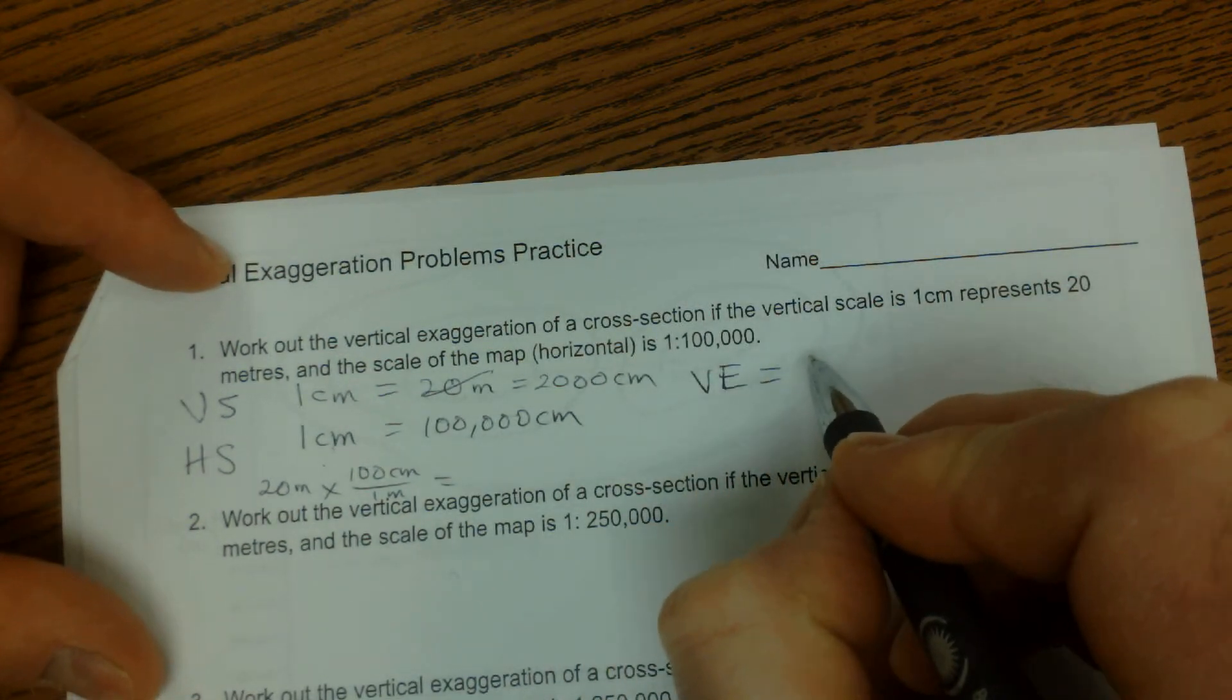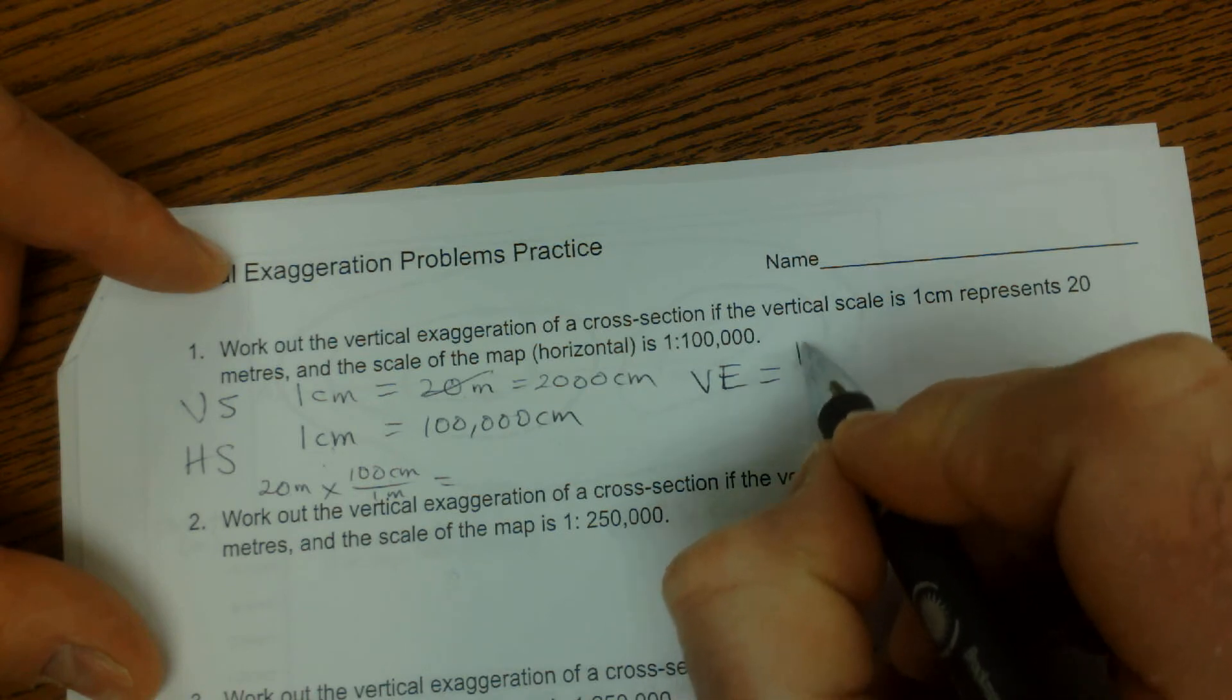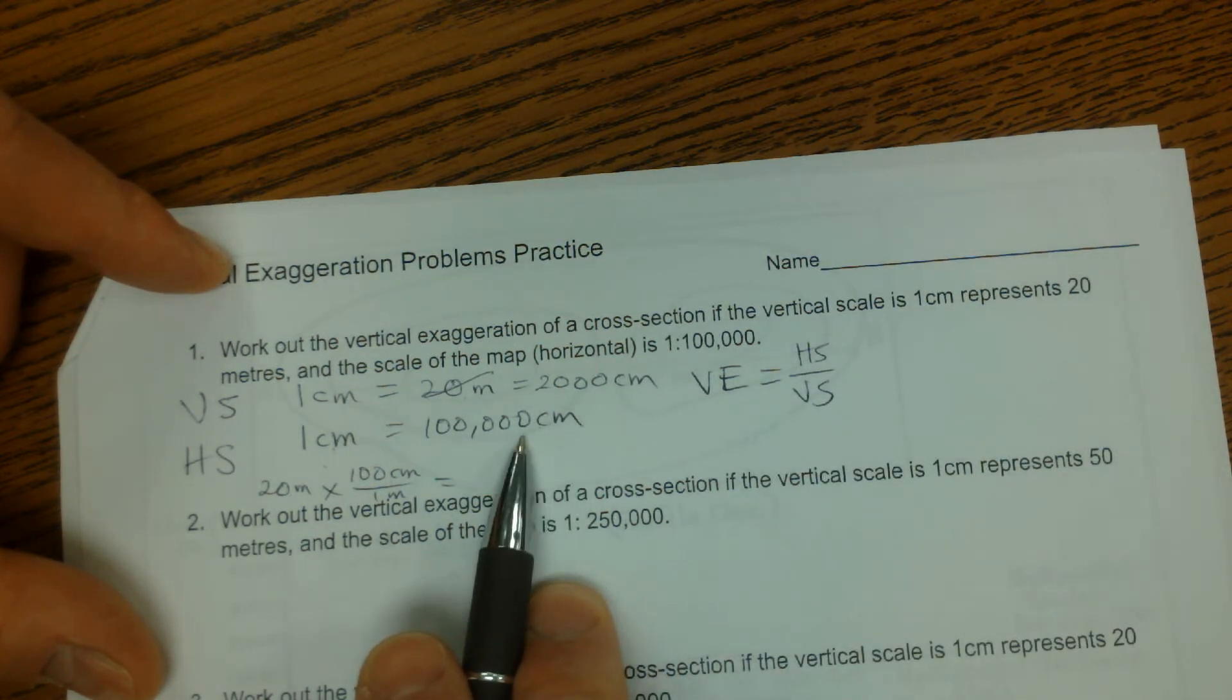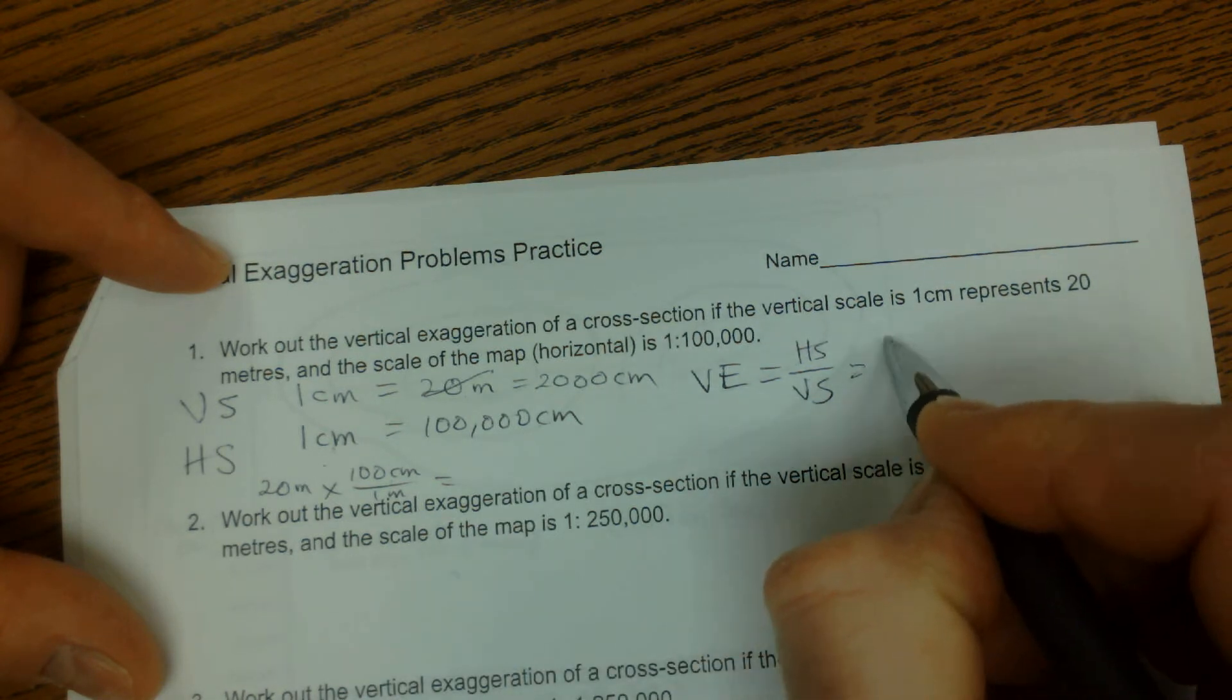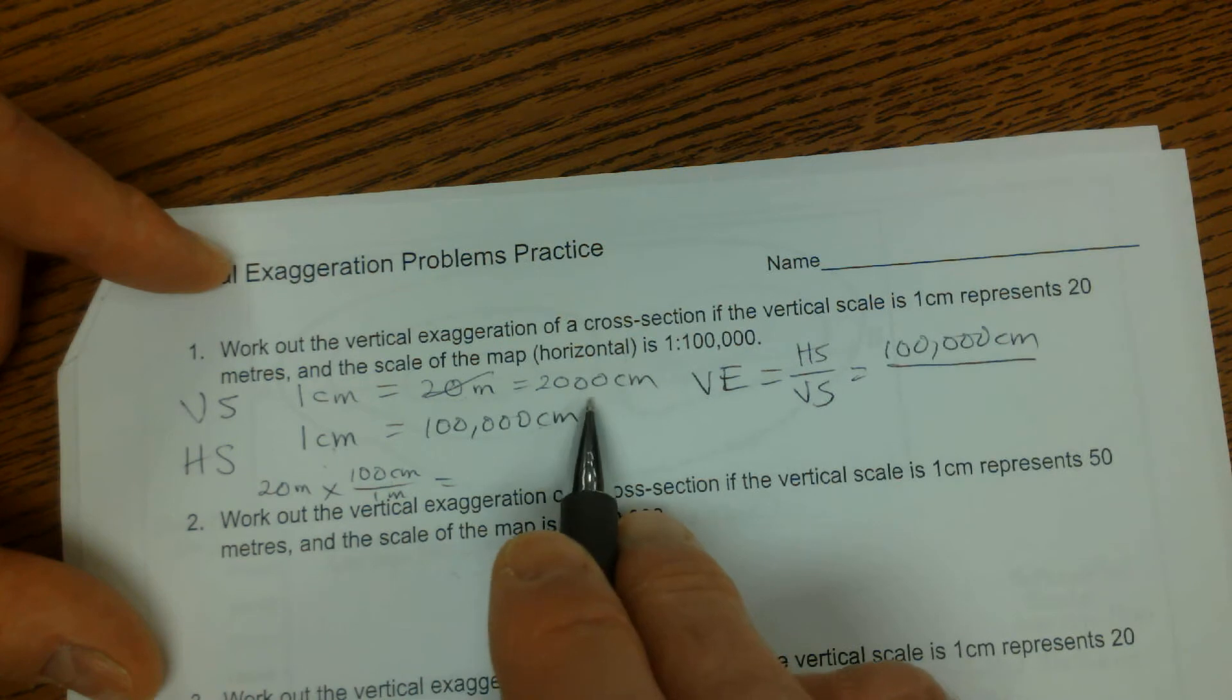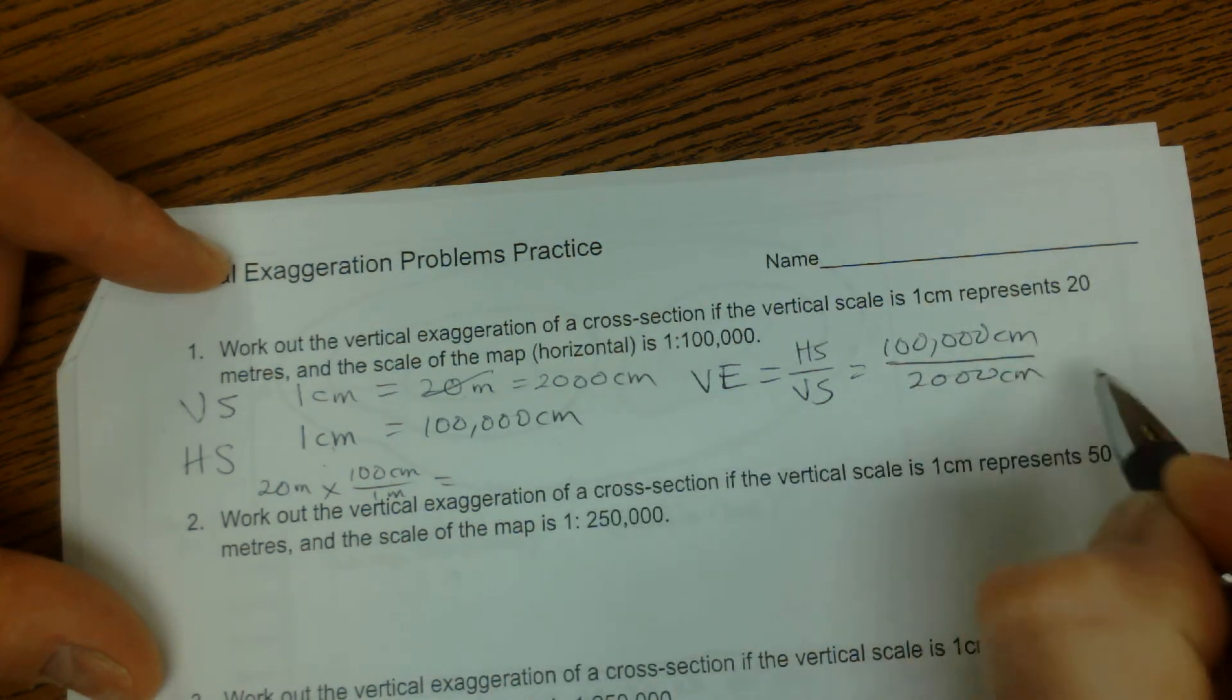So vertical exaggeration is the horizontal scale divided by the vertical scale. And I'm just going to take the second number here, 100,000, and divide it by this number, 2,000.